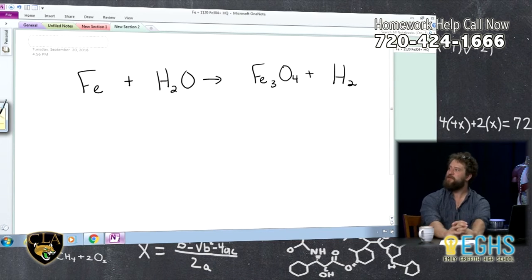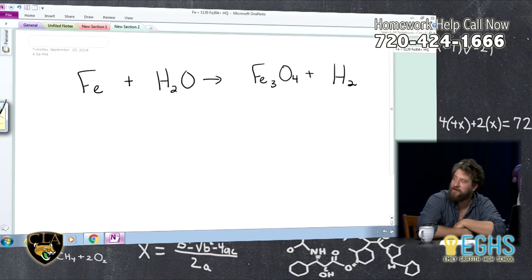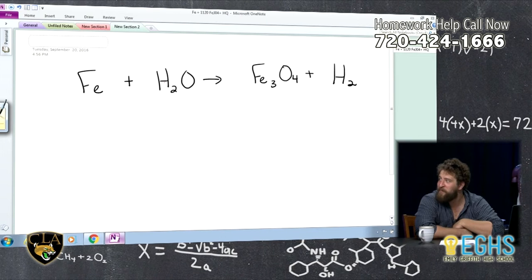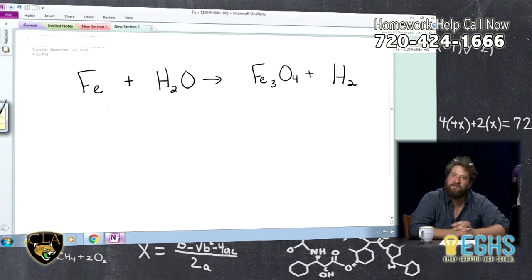So this is how I would solve this. The first thing that I would do is I would look at it and I would say, okay, so I noticed that on the left side of my equation, I have one iron or just iron by itself, and on the right side, I have three iron. So I'm probably going to end up needing three iron. So I'll go ahead and put a three in front of the Fe on the left side. Just a big three right there, right? Big old three.